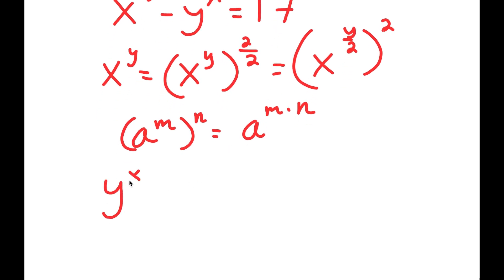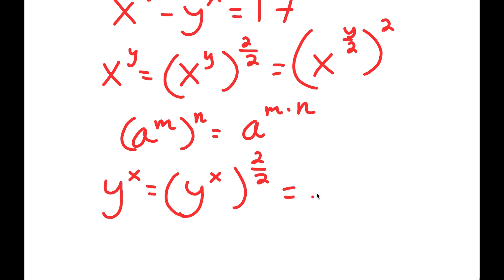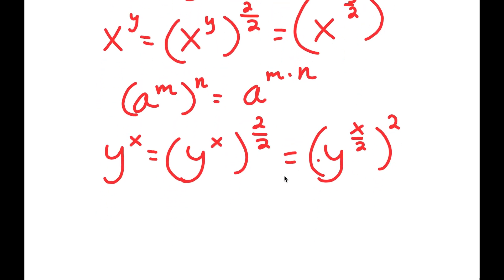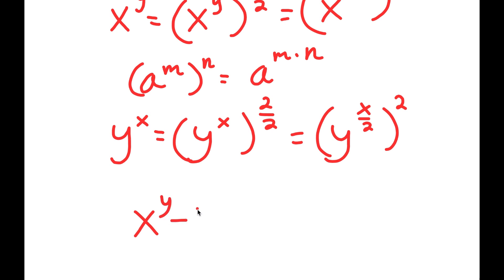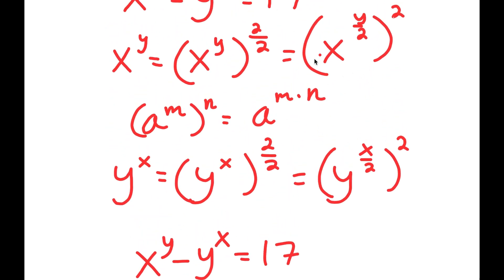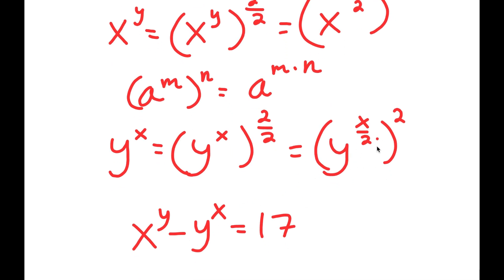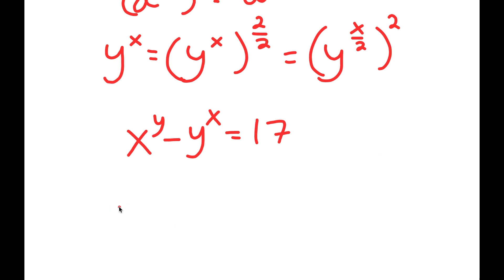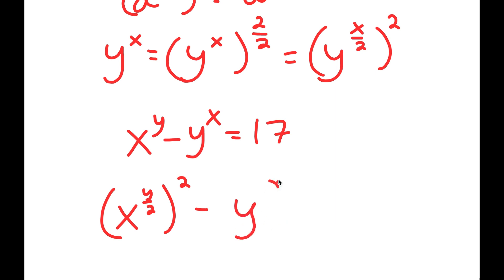Similarly, y to the power of x can be rewritten as y to the power of x to the power of 2 over 2, and then as y to the power of x over 2, all to the power of 2. So replacing both terms in the original equation, I now get x to the power of y over 2, all squared, minus y to the power of x over 2, all squared, is equal to 17.